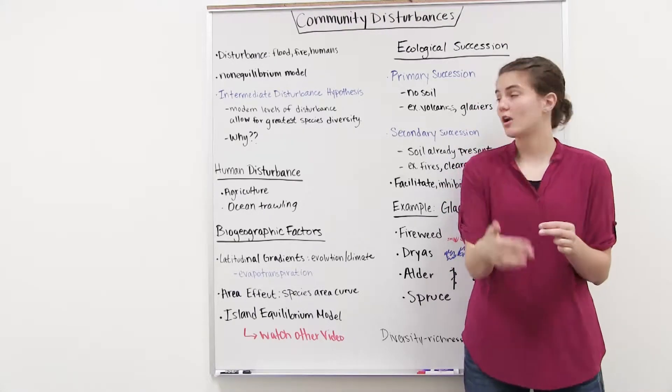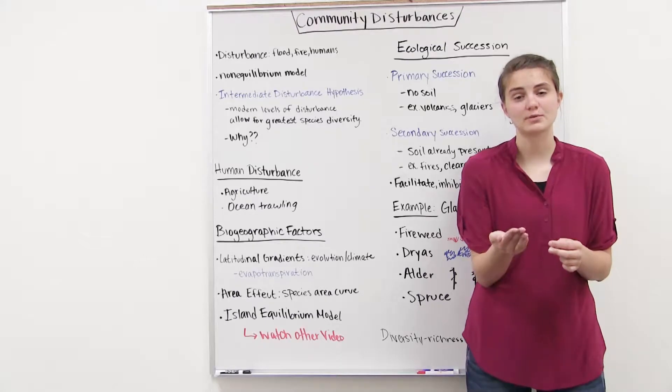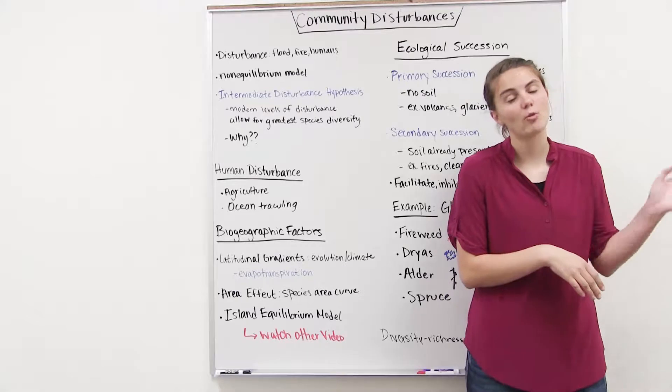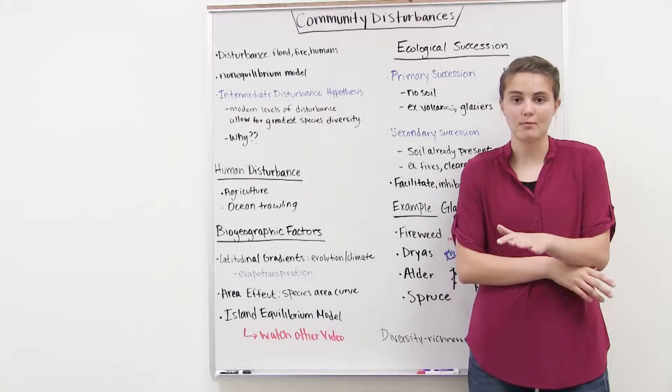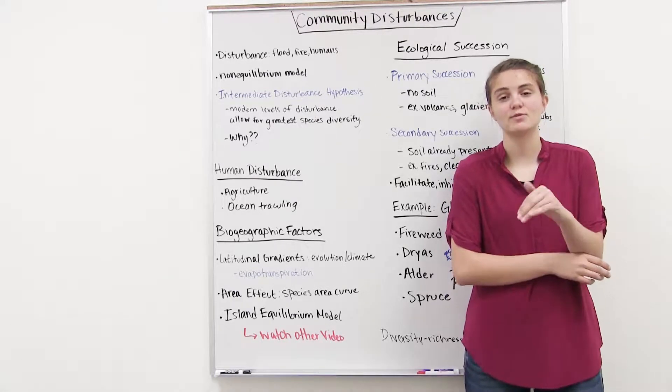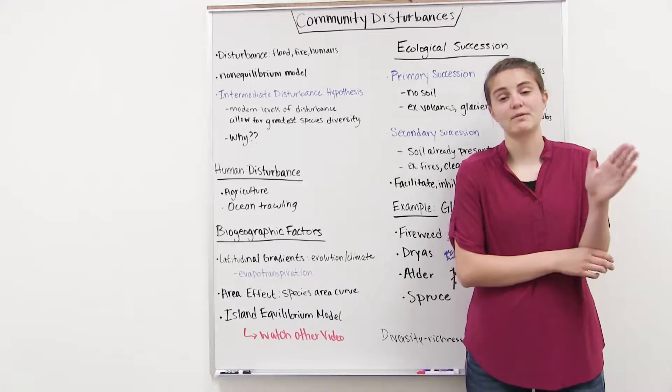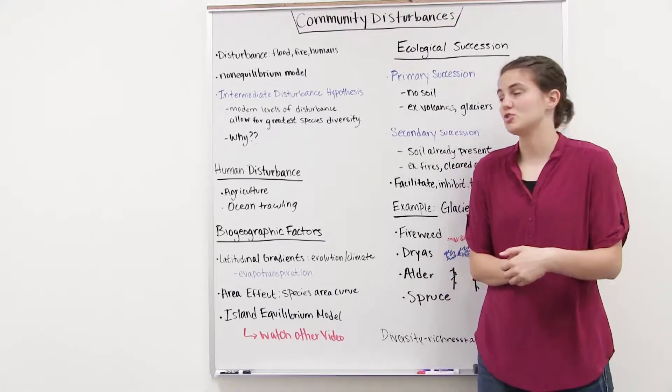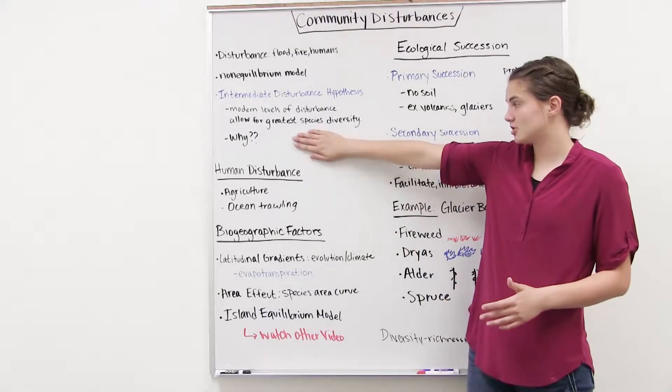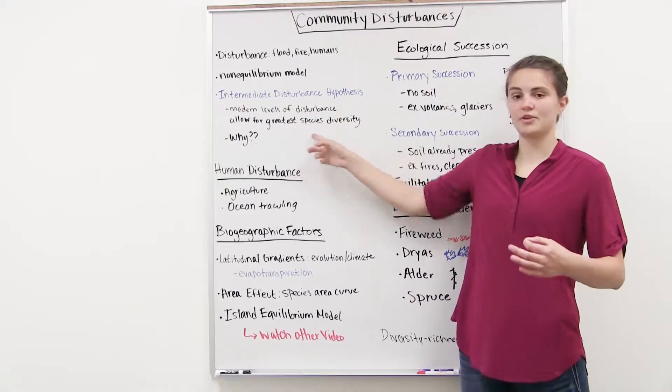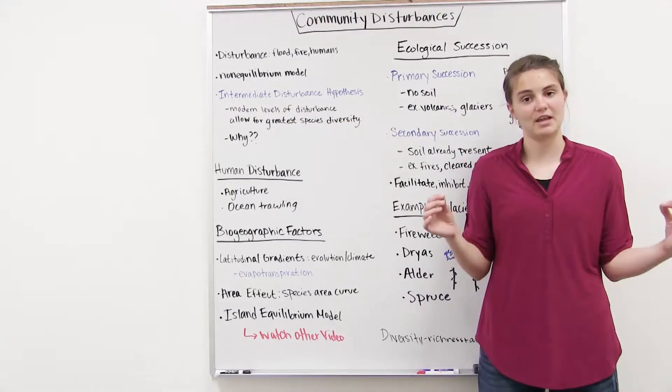So by having these periodical disturbances, what we're doing is we're messing with these dominant species, and we might be wiping some of them out, and opening up some habitat for those species that are less suited for their environment, or able to compete with those dominant species. So just remember that the intermediate disturbance hypothesis is like it sounds. Intermediate disturbance allows for the greatest species diversity, and understand why.